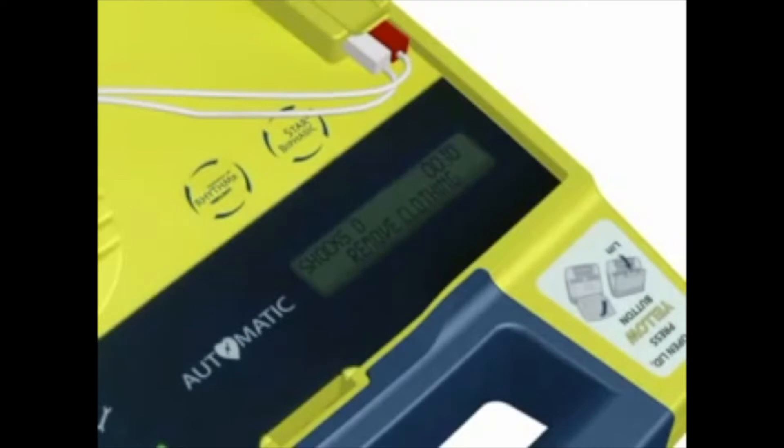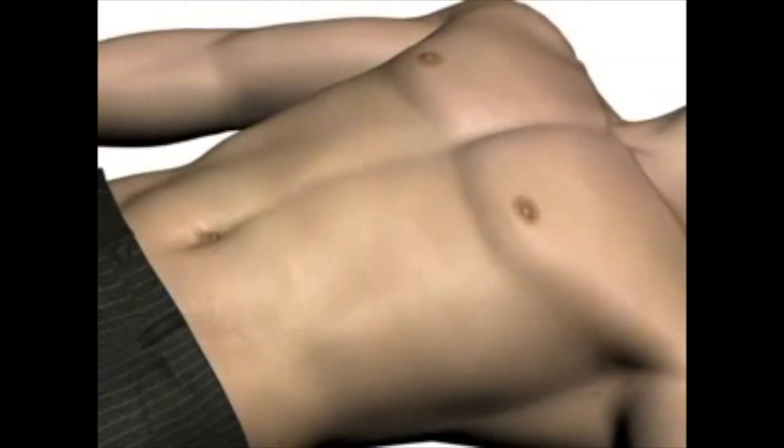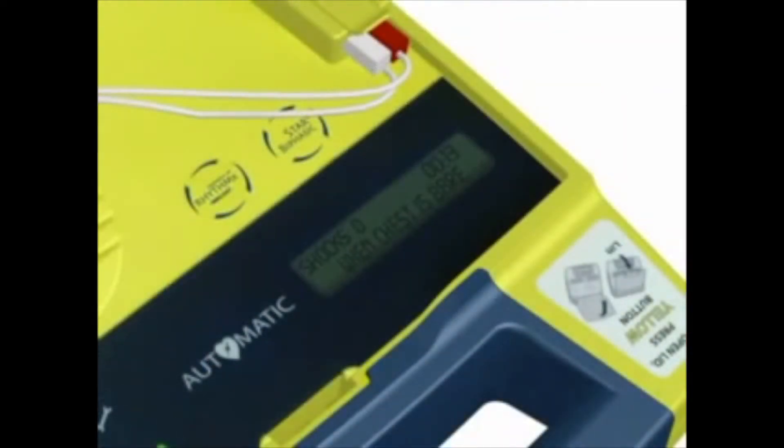Remove or cut clothing if needed. When patient's chest and torso are exposed, remove square foil package from lid of AED. Tear open foil package across dotted line and remove pads.